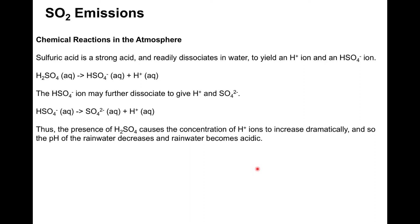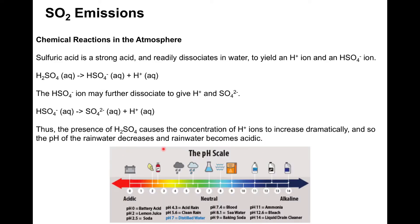Sulfuric acid readily dissociates in water, releasing hydrogen ions. Any aqueous fluid with high dissolved hydrogen ion concentration is acidic. The presence of sulfuric acid dramatically increases hydrogen ion concentration, decreasing the pH of rainwater. Returning to the pH scale: neutral is pH 7; increasing hydrogen ion concentration moves us to the left, making water more acidic. Acid rain—rain with high dissolved sulfur—when it returns to Earth as precipitation will have negative impacts on the environment.